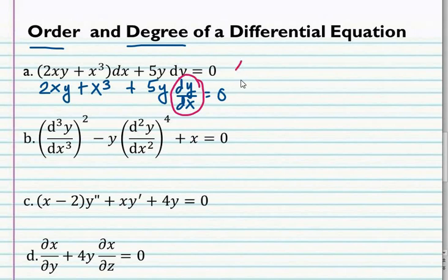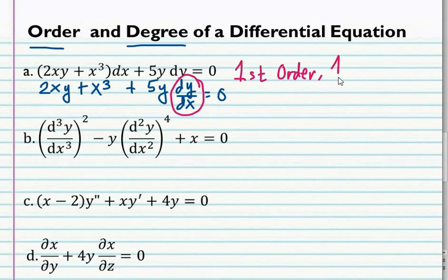For letter a, this is first order. What is the degree or the exponent of the highest order derivative? It is simply in the first degree. So, first order and at the same time, first degree.